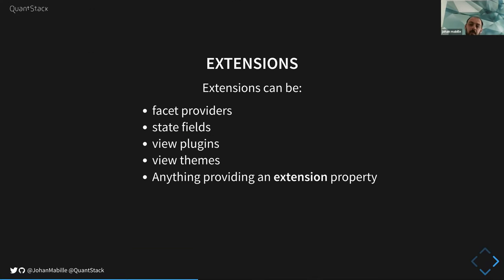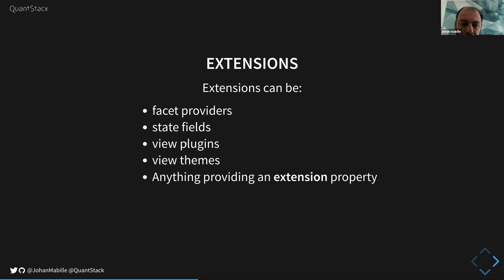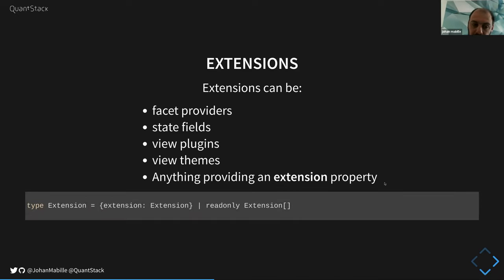Extensions can come from many different sources in CodeMirror 6. We have facet providers — I'll come back to those — basically they are labeled values. We have state fields for storing additional state. We have view plugins for controlling how you add decorations to the view. And anything providing an extension property can be used as an extension. The extension type is either an array of extensions or an object providing an extension property.